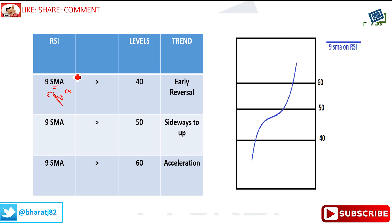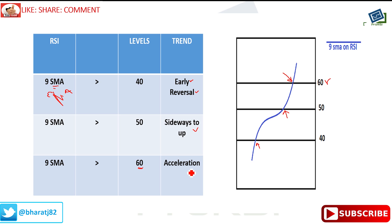Let us start with the acceleration factor. When we look at the nine SMA on the RSI and see it crossing above the 40 level, this is a sign of early reversal. When the nine SMA on the RSI moves above the 50 level, it is a sign of a sideways-to-uptrend transition. Now here the real magic starts: when the nine SMA on the RSI moves above the 60 level, this is the place you have to watch for, because at this point trend acceleration begins — the trend starts to accelerate in a single direction in a very aggressive manner.